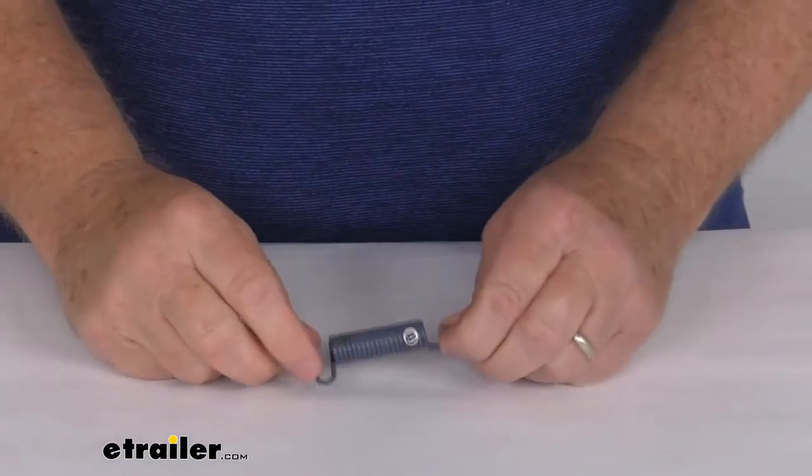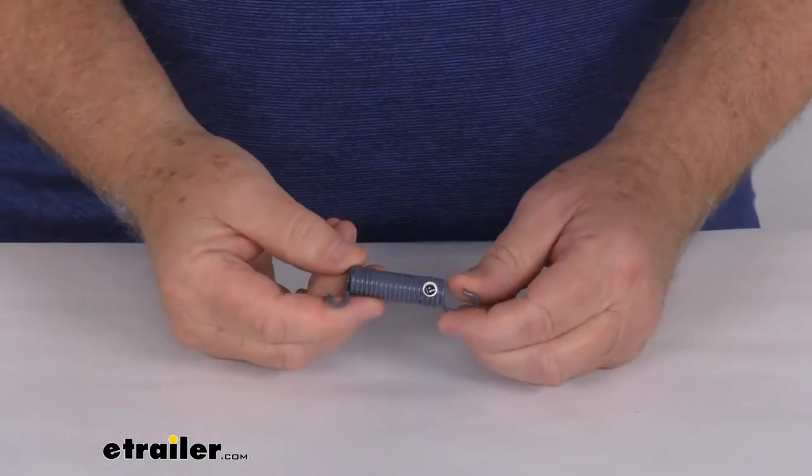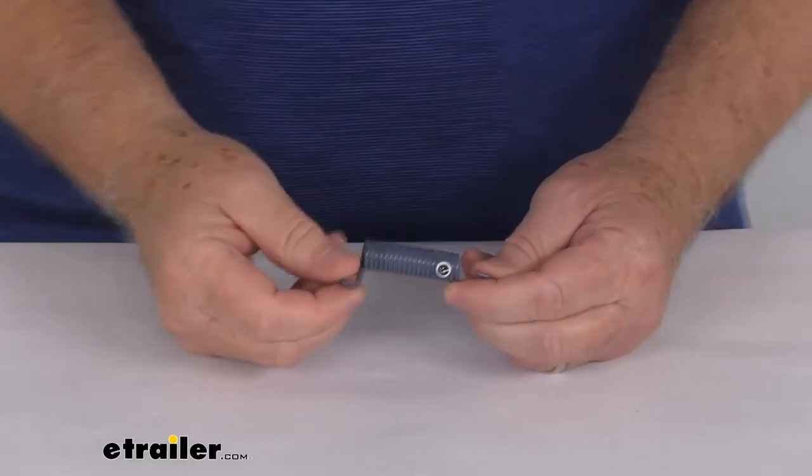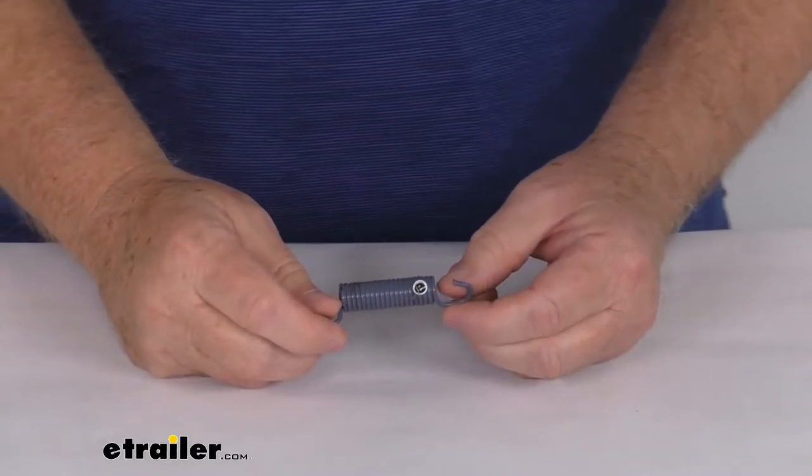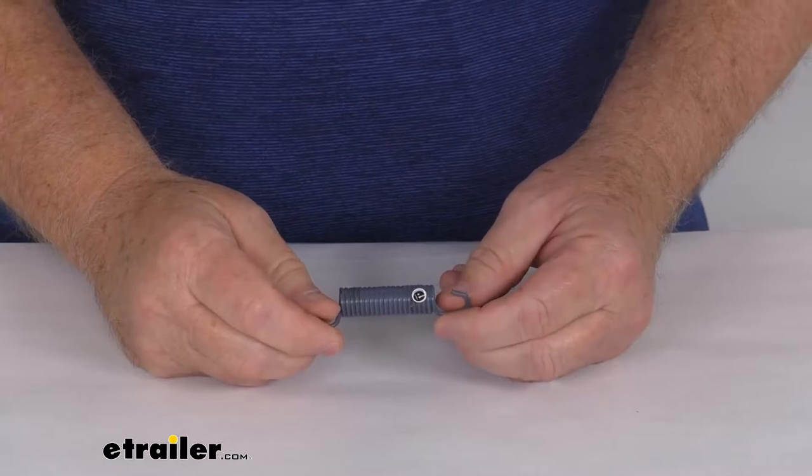Hello everybody, this is Jeff at eTrailer.com. Today we're going to take a look at this replacement primary shoe retractor spring for your Dexter 12-inch by 2-inch free backing hydraulic brakes.